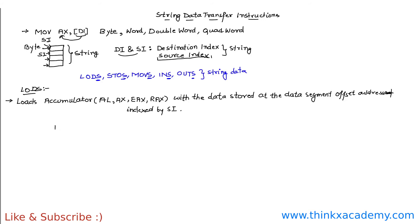Here are the different variants of the LODS instruction: LODSB, LODSW, LODSD, and LODSQ. They differ because at the end we have B, W, D, and Q — where B represents byte, W represents word, D represents double word, and Q represents quad word. Let's write sample instructions corresponding to each of these LODS variant instructions.